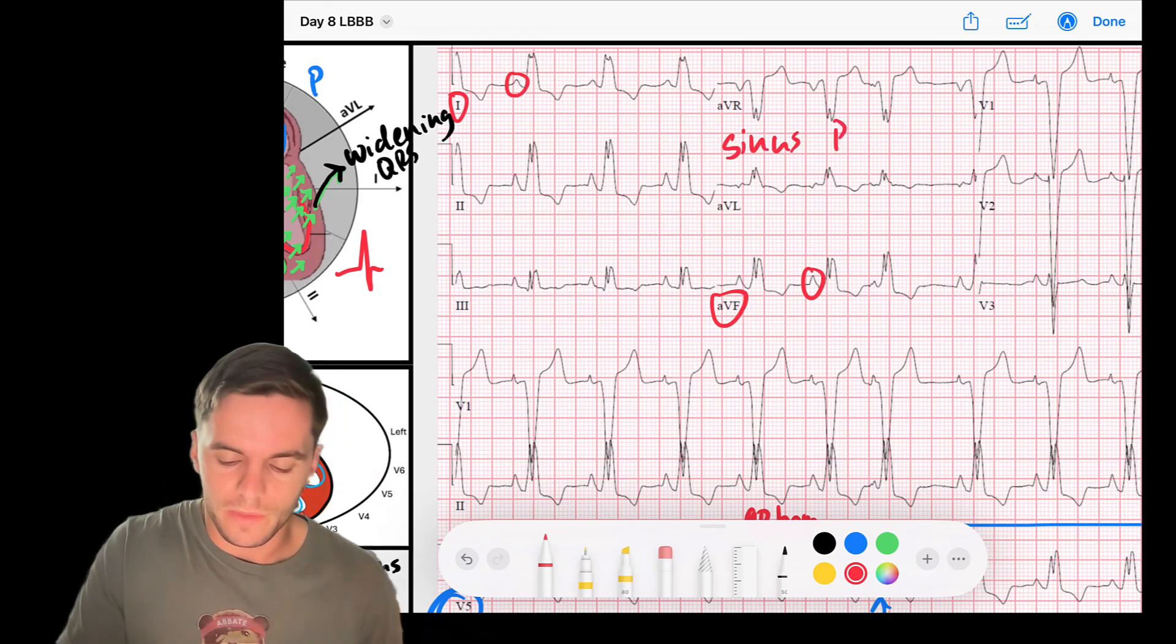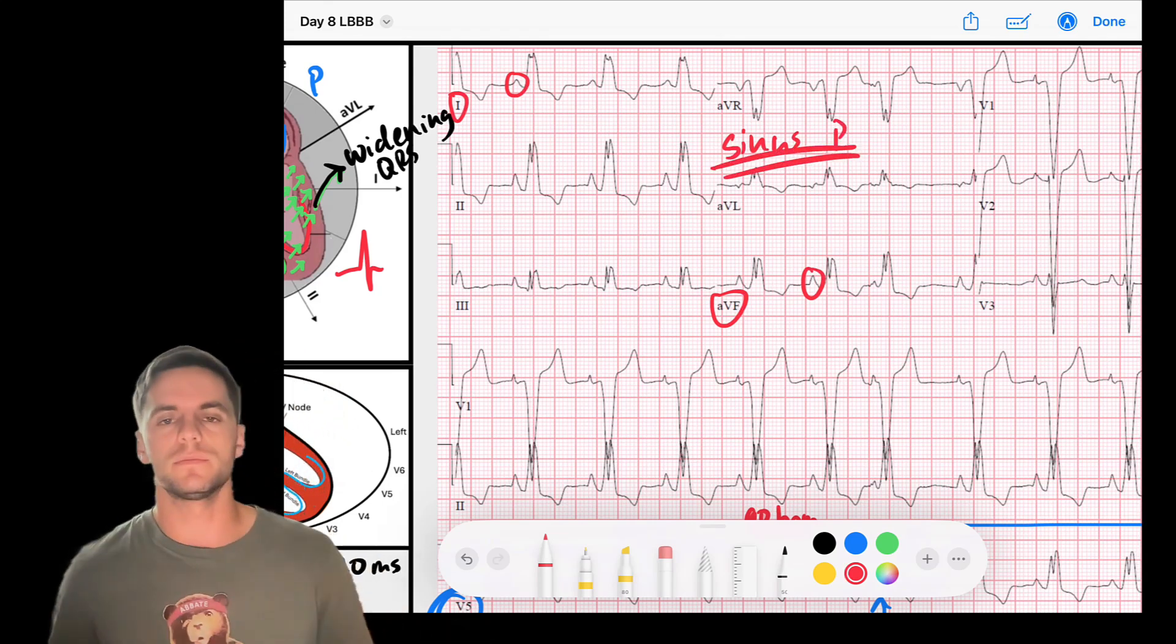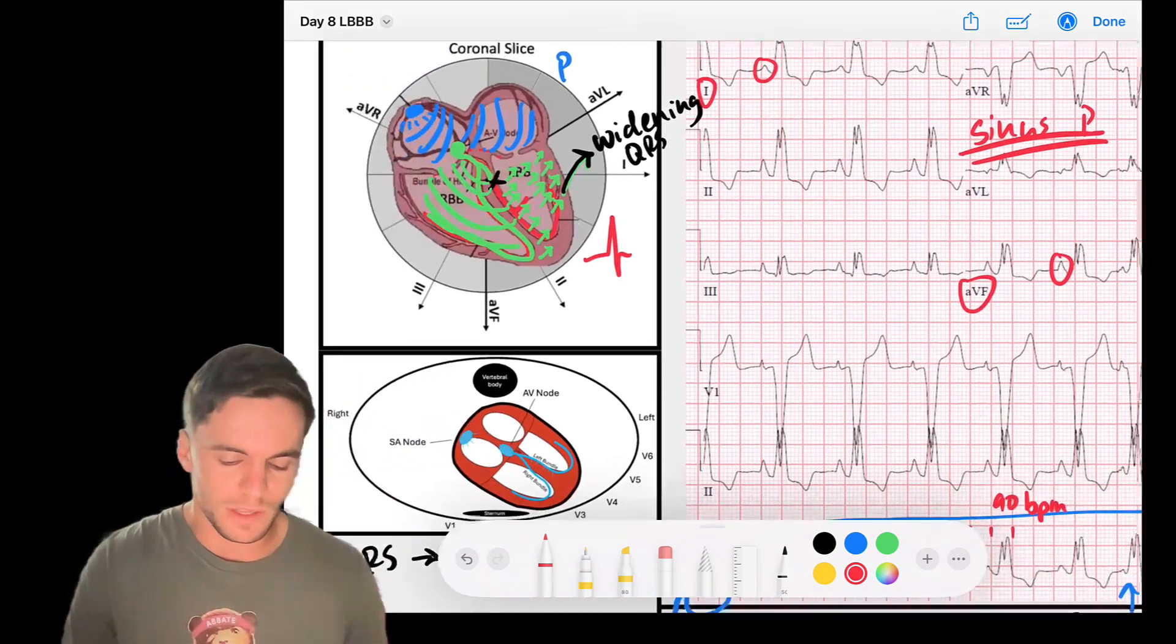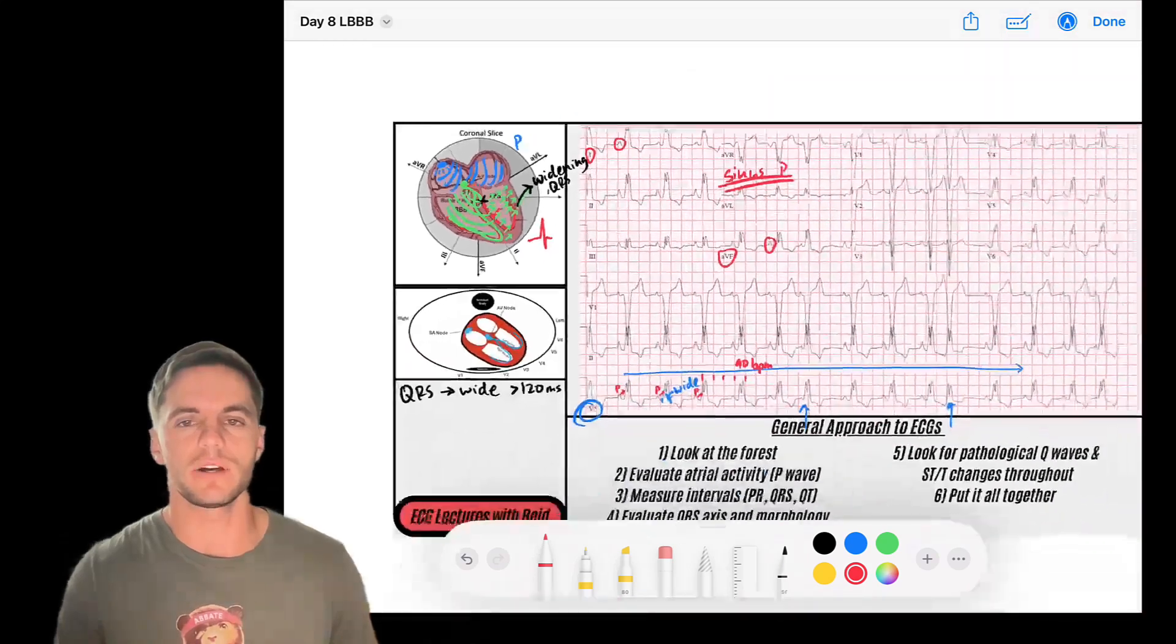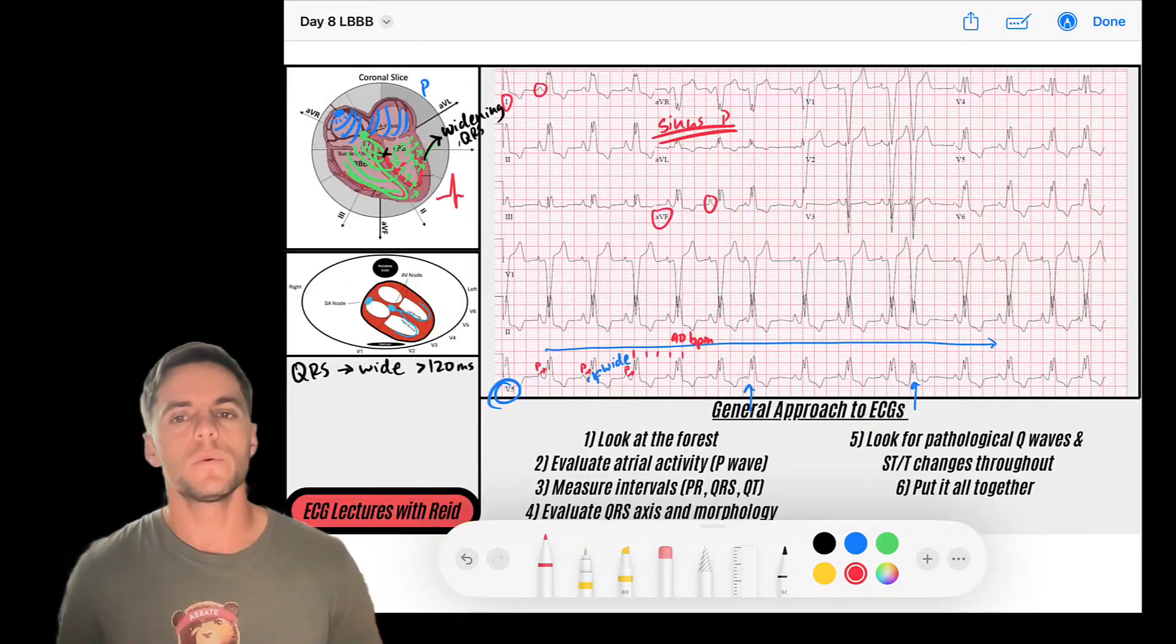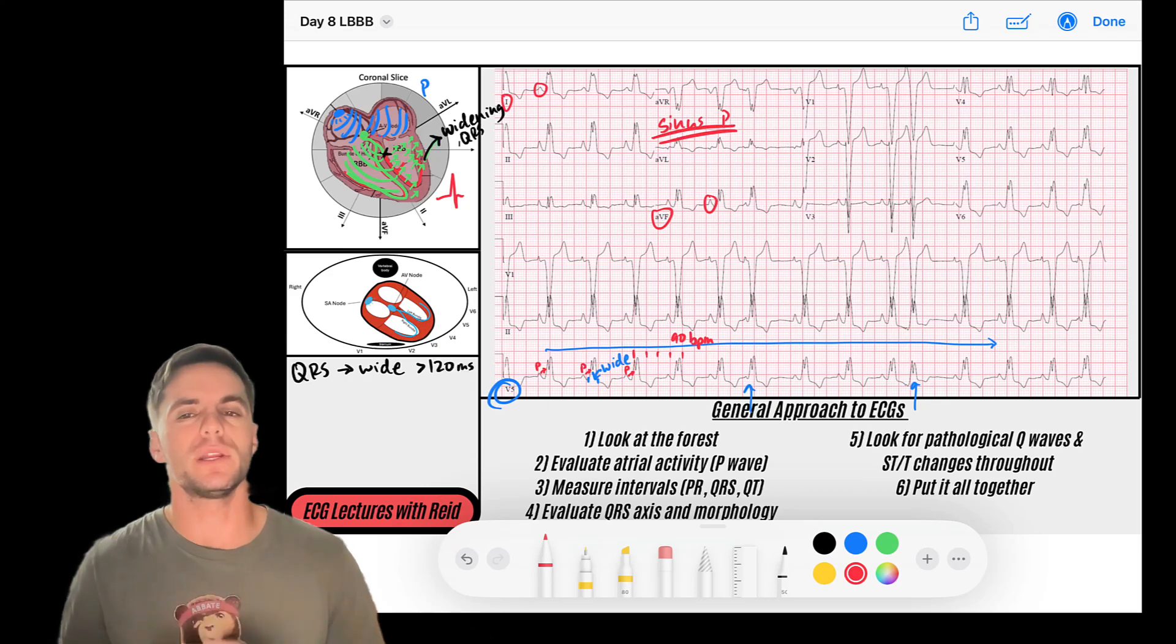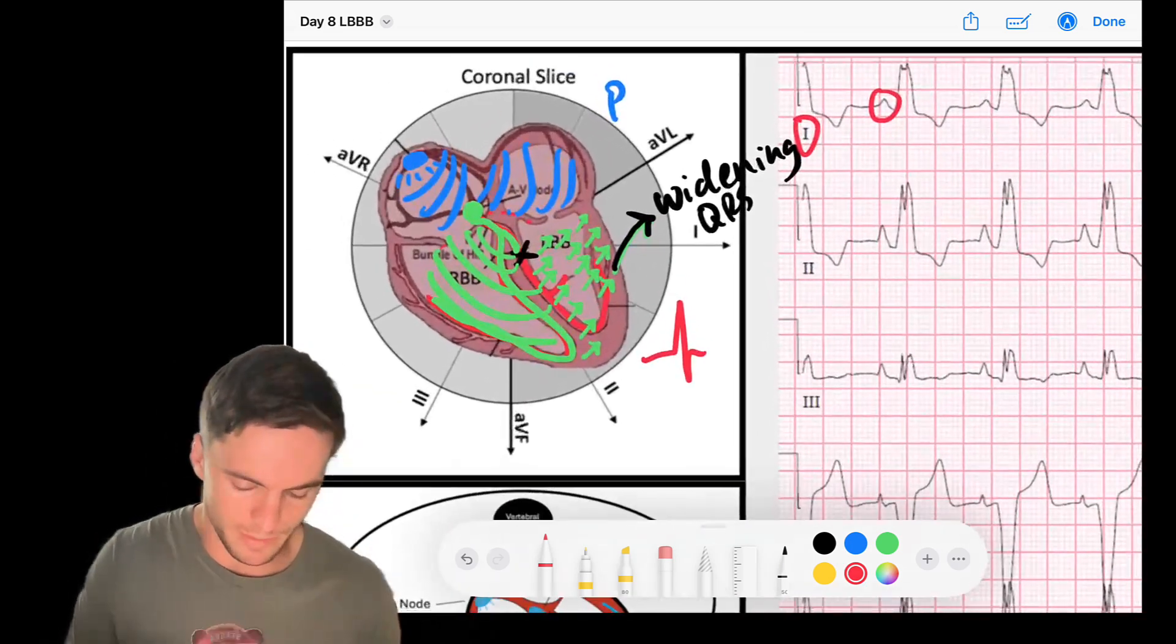So remember, we have a sinus rhythm now with normal AV conduction, but it's conducting to a wide complex QRS. So that makes me think that maybe there's a bundle branch block like we talked about. So we know that you can have a right or a left bundle branch block. So now it's our job to determine is the wide complex QRS fitting a morphology that we should expect to see, morphologic changes that we should expect to see in a bundle branch block pattern.